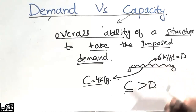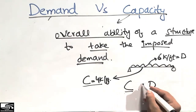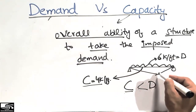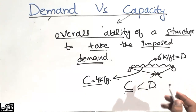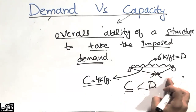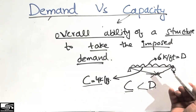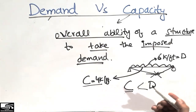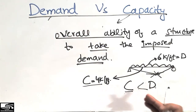However, if the demand coming on this beam is greater than 4 kips per foot — for example, 6 kips per foot — then the capacity is less than the demand and this beam will fail and break into two pieces. We call this a collapse. The factor of safety in this case is less than the desirable factor of safety.